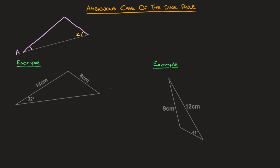Say the side length opposite the acute angle is called A, and the side length opposite the angle we're trying to find is B. Then if B is greater than A — in other words, if the side length opposite the angle we're trying to find is the longest of the two side lengths — we'll be faced with the ambiguous case of the sine rule, meaning there will be two possible values for that angle.